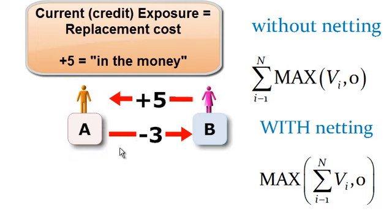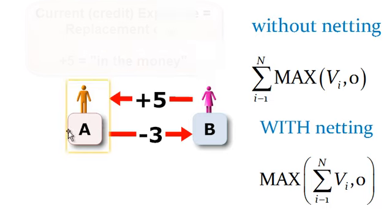So this contract is in the money to counterparty A, and then the other derivative, again a separate bilateral contract, is out of the money or has a value of negative three, meaning it's in the money to counterparty B.